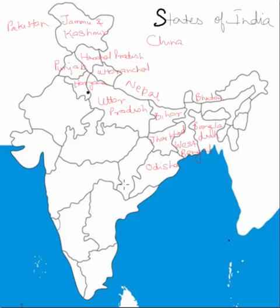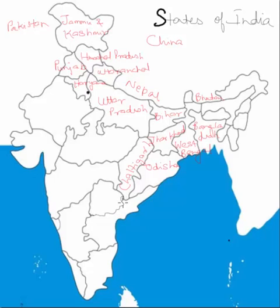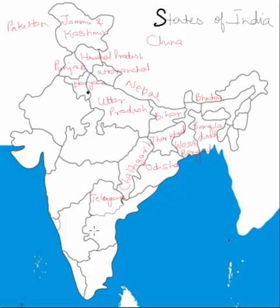To the south of Chhattisgarh and Odisha there was one large state, but this has now changed — a new state has been carved out. The state that borders only Chhattisgarh and not Odisha is Telangana. The one that borders Chhattisgarh slightly, borders all of Odisha, and has the Bay of Bengal to the east is Andhra Pradesh.